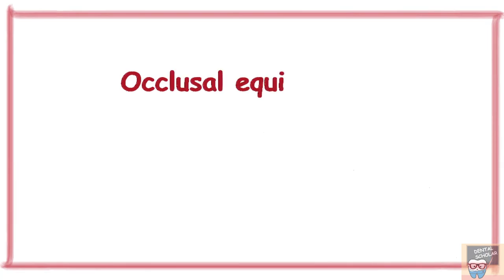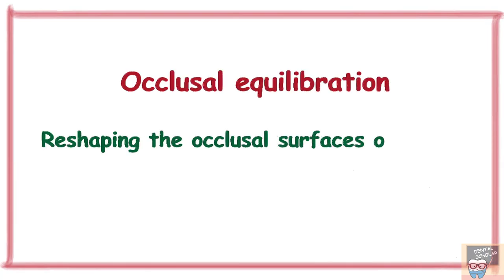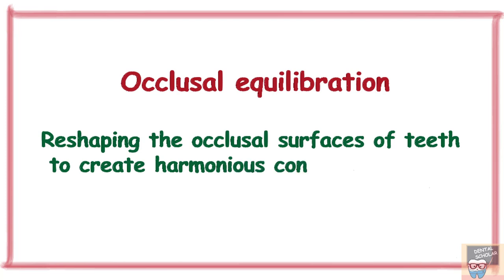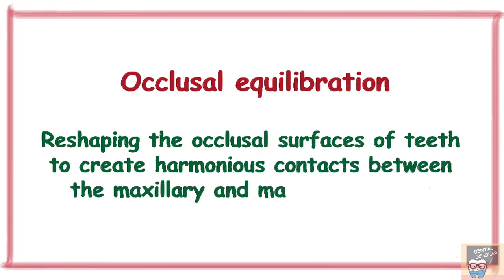Let's start with the definition of occlusal equilibration. Occlusal equilibration is the reshaping of the occlusal surface of the teeth to create harmonious contacts between the maxillary and the mandibular teeth. This involves the reduction of either the cusp or central fossa, or sometimes both.